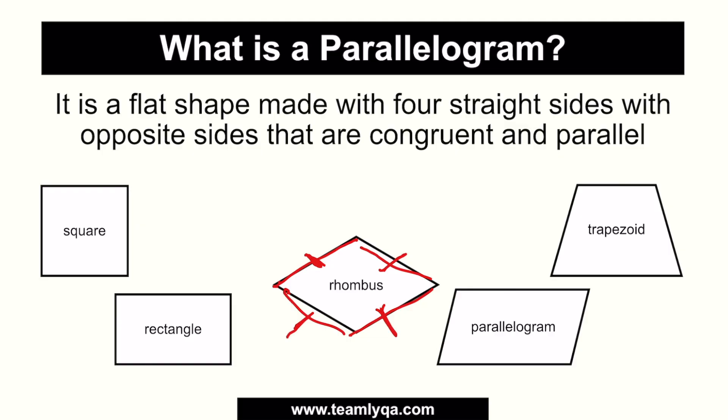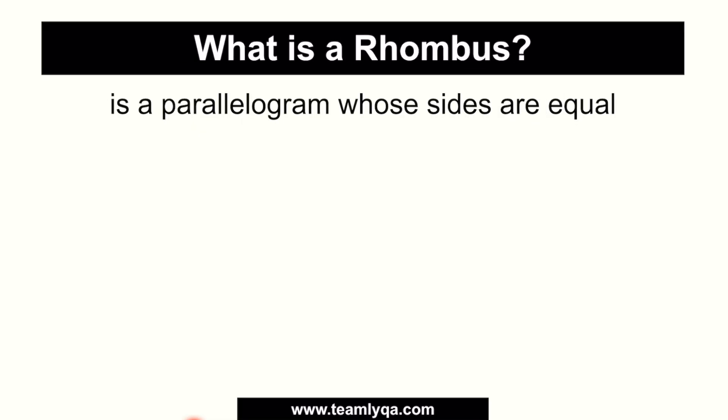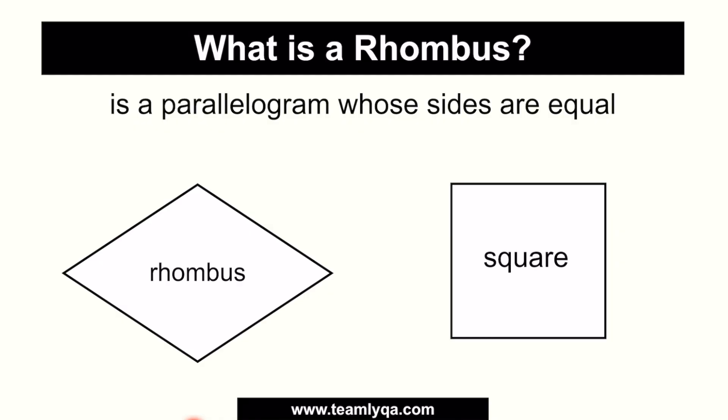So, that means the rhombus is a parallelogram. That means the opposite sides are congruent and also parallel. So, what does rhombus mean? It's a parallelogram whose sides are equal. Now, this definition, if you think about it, also fits one of the shapes we saw earlier, which is the square.